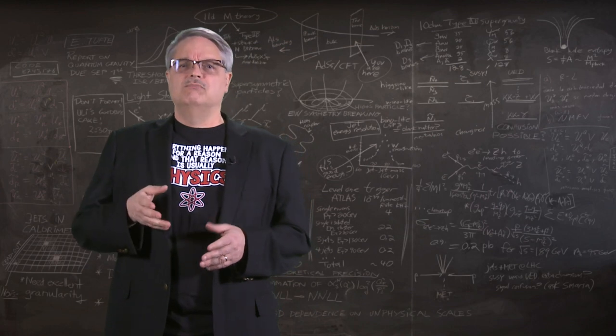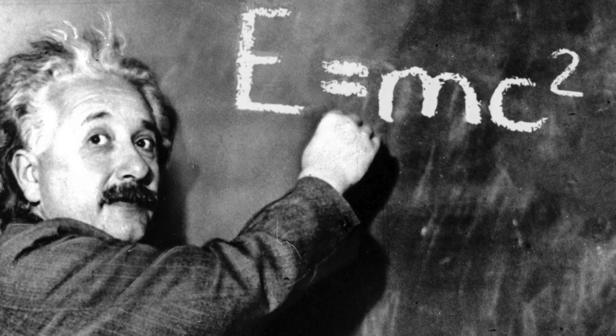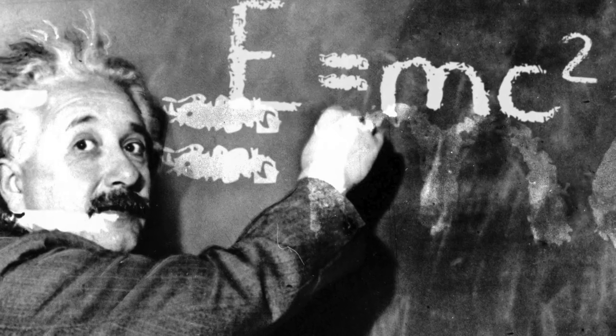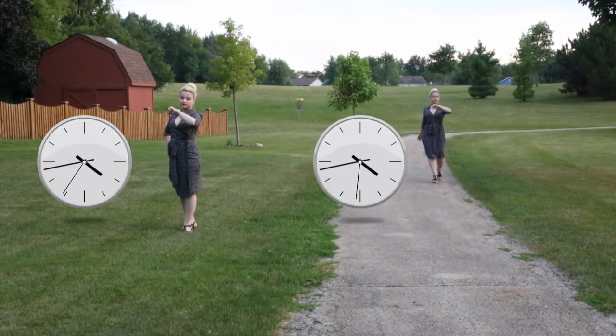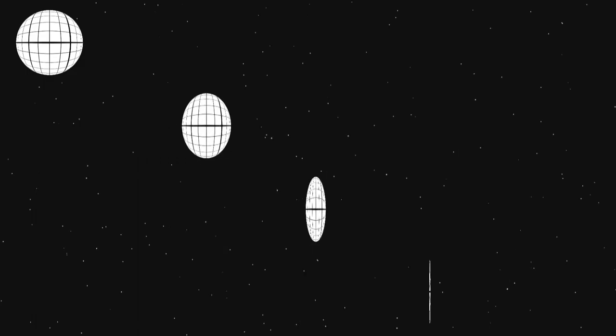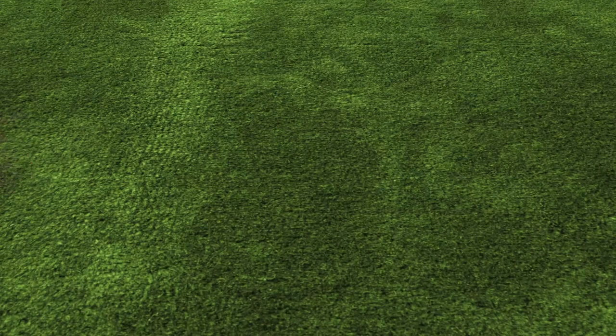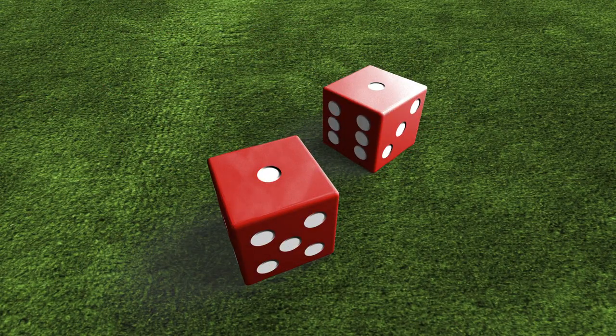Perhaps the two physics theories that are the hardest to accept when you first encounter them are Einstein's theory of relativity and quantum mechanics. The first one talks about how moving clocks run more slowly than stationary ones and how objects in motion appear to shrink. The second one tells us that no measurement is certain and that probability reigns supreme in the subatomic world.